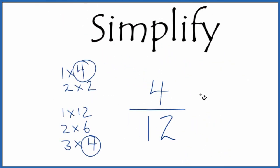So if we divide 4 by 4, we get 1. If we divide 12 by 4, we get 3. 3 times 4 is 12. So we've simplified the fraction 4 twelfths down to 1 third.